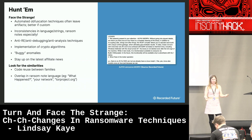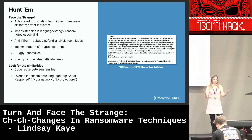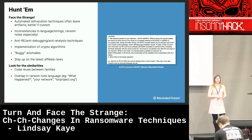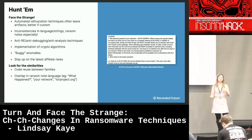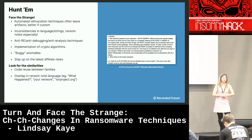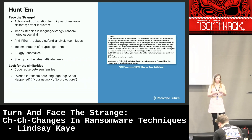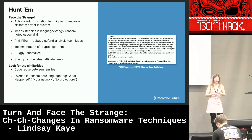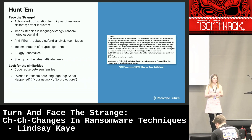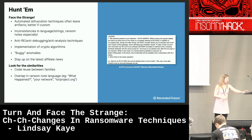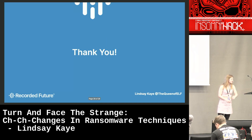If you're looking for ransomware — including newer or smaller variants — look for code reuse between families. If there's a leaked builder and you're trying to find other groups using it, signature for that and start mapping it out. Also look for common ransomware language in samples, like references to .onion network or Tor project. And with that, thank you so much.